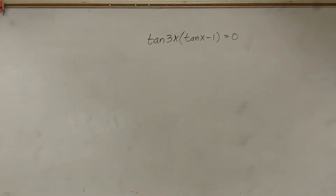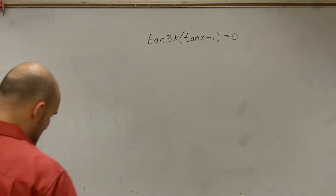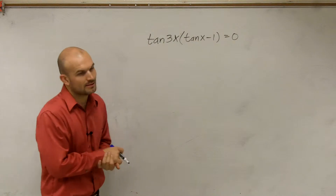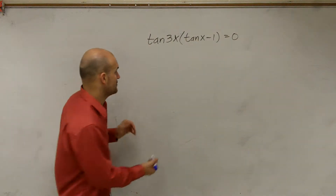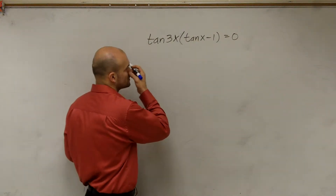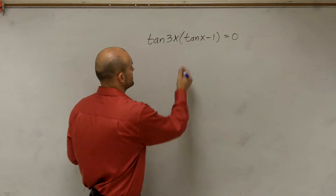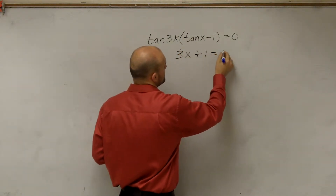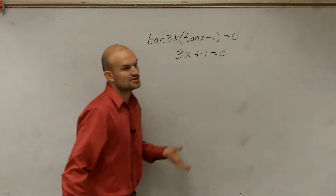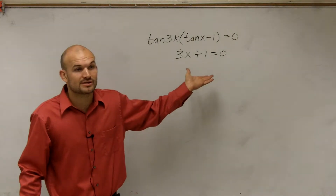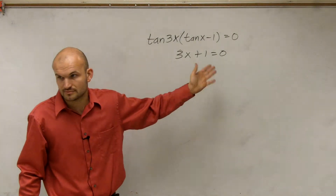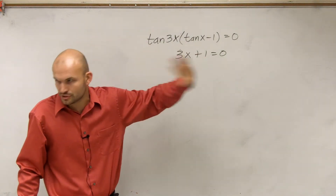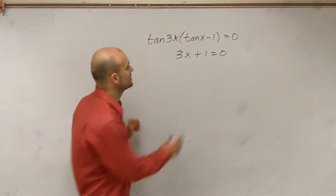I'm going to ramble on again about a different function. Let me just go through a simplified one. So far, we've done easy problems like this — we've solved 3x plus 1 equals 0. To solve for x, we just use inverse operations, right? Linear equation, inverse operations — you learned that in Algebra 1.